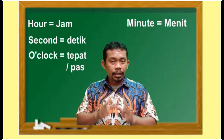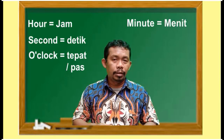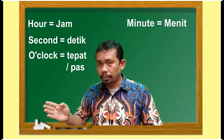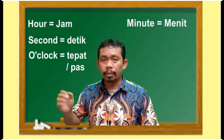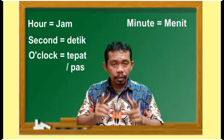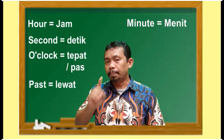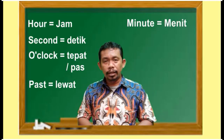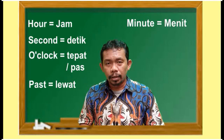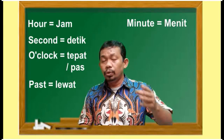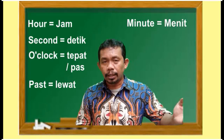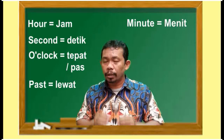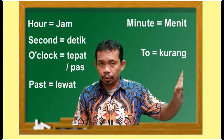Ketika kita ingin menyebutkan jam 7 lewat sekian, maka yang kita gunakan adalah 'past'. Dan ketika kita ingin menyebutkan jam 7 kurang berapa menit, maka yang kita gunakan adalah 'to'.